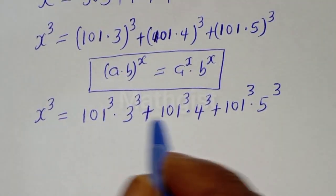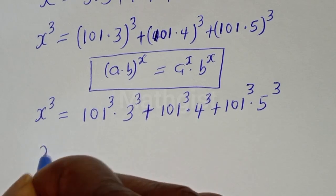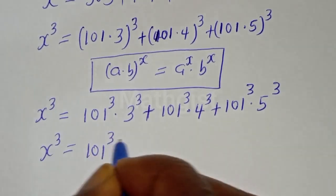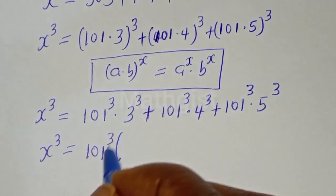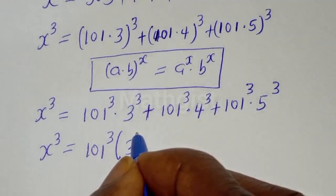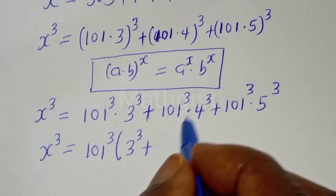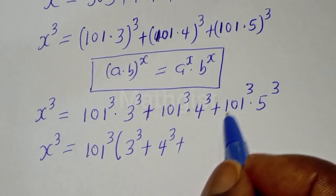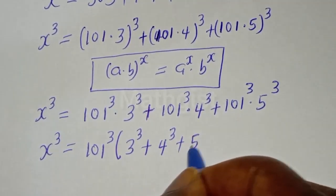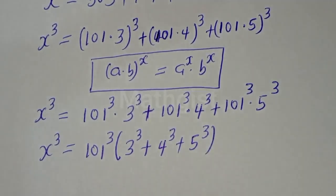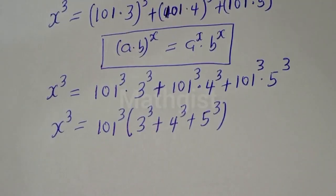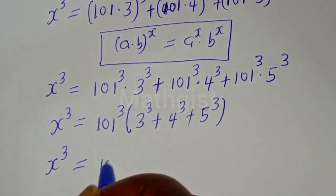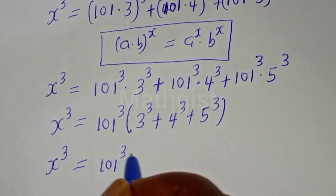We can see that 101 to the power of 3 is common — let's bring it out. S raised to power 3 is equal to 101 to the power of 3, multiplied by the bracket: 3 raised to power 3, plus 4 raised to power 3, plus 5 raised to power 3.